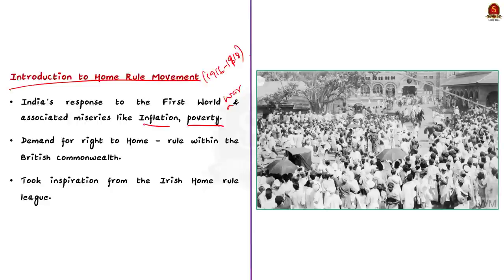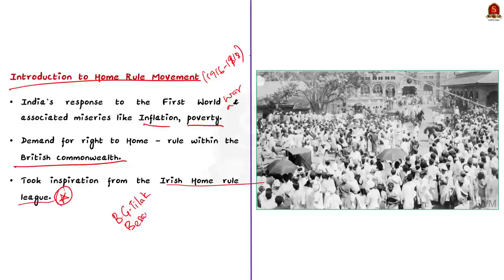For example, you can say: the Home Rule Movement (1916–1918) in India was an important milestone in the Indian freedom struggle. It was India's response to the First World War and its associated miseries like inflation and poverty. Moreover, it demanded the right to self-rule or home rule within the British Commonwealth. The movement took inspiration from the Irish Home Rule League. Important leaders include Bal Gangadhar Tilak, Annie Besant, G.S. Khaparde, Subramania Iyer and Mohamed Ali Jinnah.